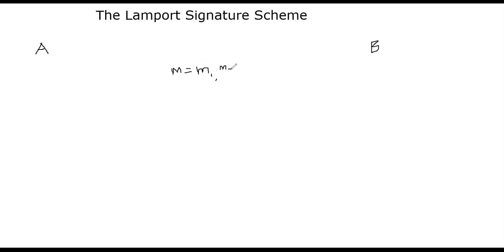Let's say the message that Alice wants to send to Bob is an L-bit message: M1, M2, ..., ML. This is basically an L-bit binary string. Each M is either 0 or 1. So what she's going to do is create public and private keys, publish the public key, and keep parts of the private key private. She's going to expose some of the private key in this scheme, but she will only use the same private key once — so it's a one-time signature scheme.